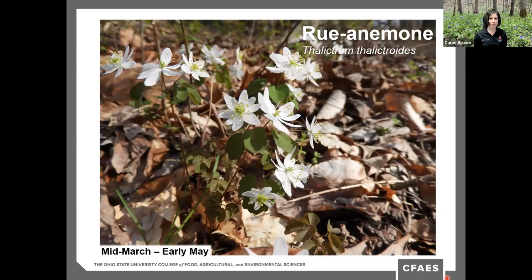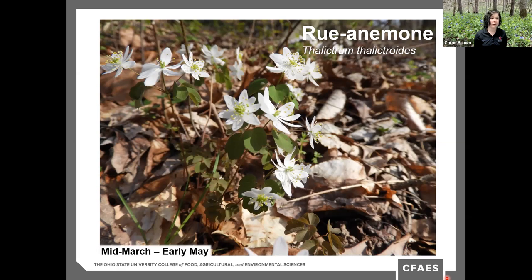Rue anemone is in the buttercup family. It's small, lacy, delicate, and beautiful. Because it stays so low to the ground it can be easy to miss, but it is fairly common in a variety of woodland habitats from floodplains to even drier uplands. If you're lucky you may find a stand with pinkish flowers, but typically they are brilliant white. Like some other spring ephemerals, they offer no nectar reward to visiting pollinators, but the species is still frequented by small bees and flies that will dine on its pollen.